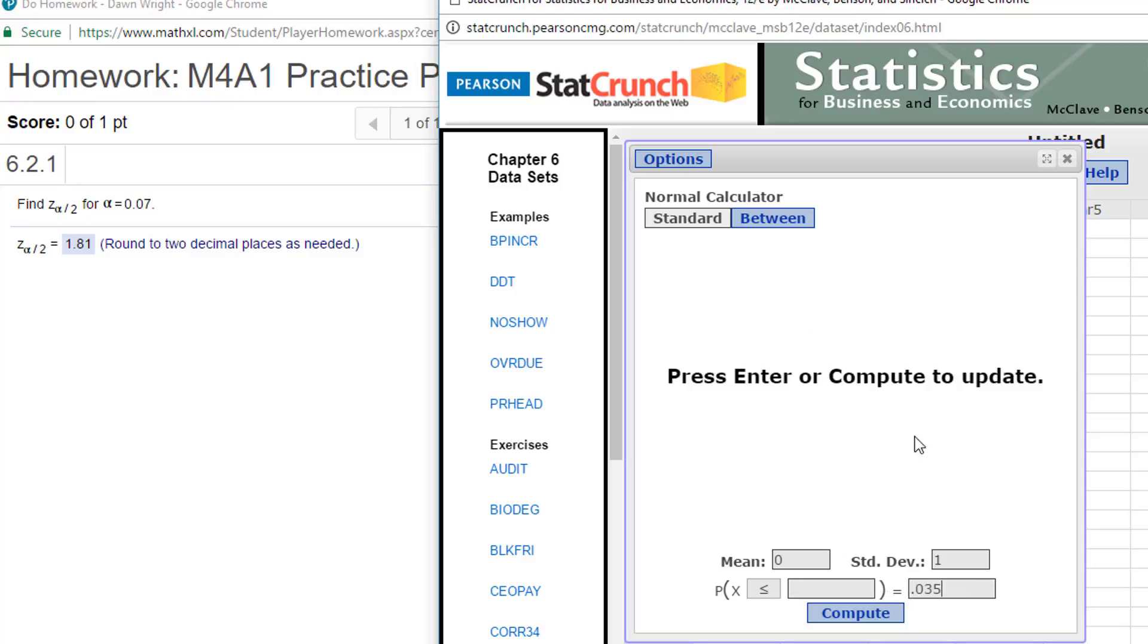And our normal calculator comes up with the standard normal mean and standard normal standard deviation, which is what we need in order to emulate the tables. I put in my alpha over 2, and I get minus 1.81 because I'm pointing to the right side.